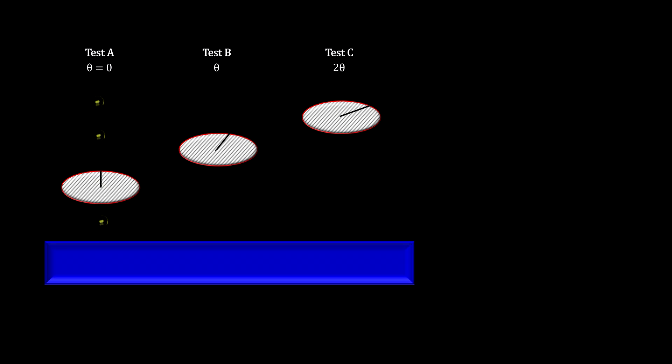Here we have three tests, A, B, and C. Test A sends vertically polarized photons into a vertically polarized filter. Test B sends vertically polarized photons into a filter polarized at an angle theta. And test C sends vertically polarized photons into a filter polarized at an angle 2 theta.